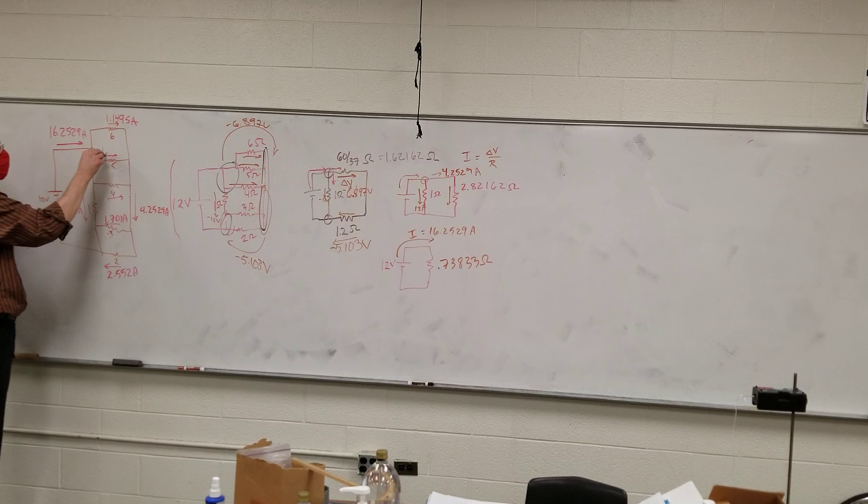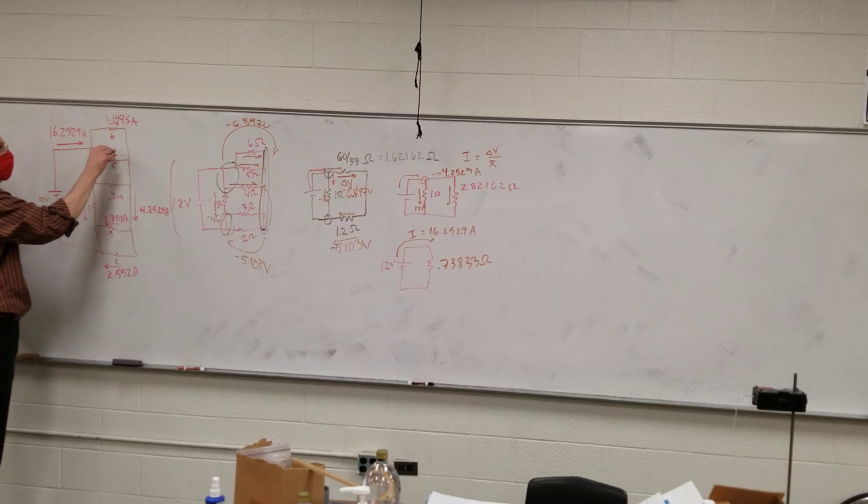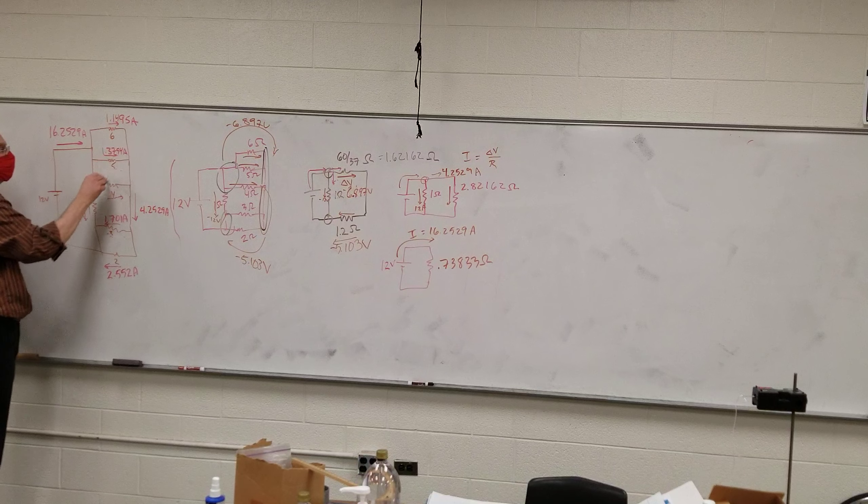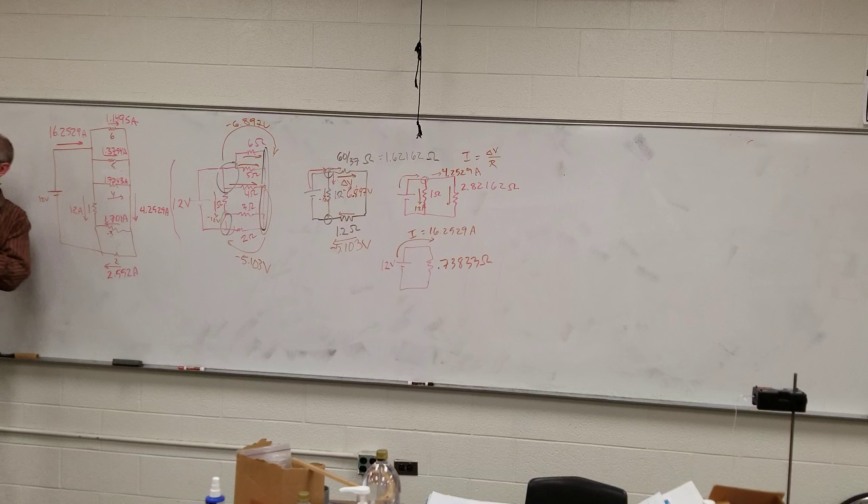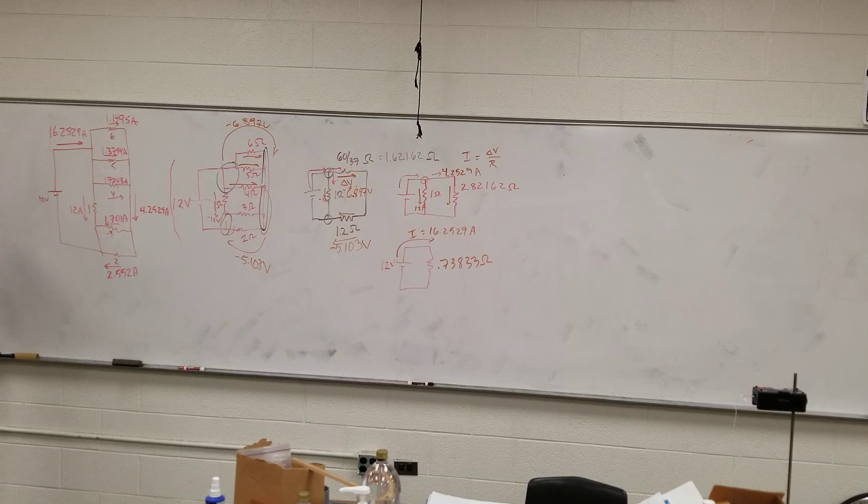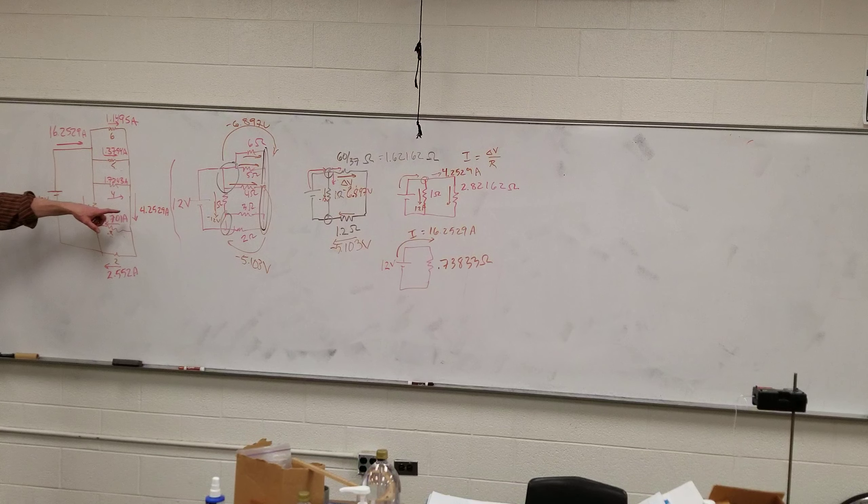For the 5, I got 1.3794. For the 4, I got 1.7243. And Devon, you got the same stuff? They don't add up to 6.8. They should add up to 4.2529.